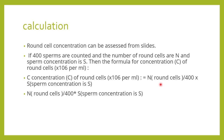When you get a semen analysis and count cells, you need to comment on the round cell concentration. You can classify them in general as round cells. If 400 sperms are counted and the number of round cells counted is n, then the round cell concentration per mL = (n ÷ 400) × sperm concentration — that gives you the round cell concentration.